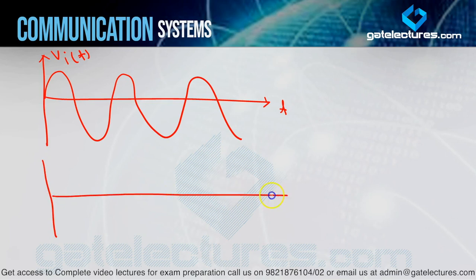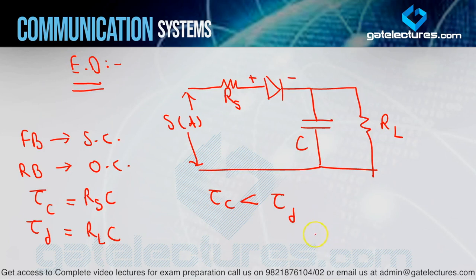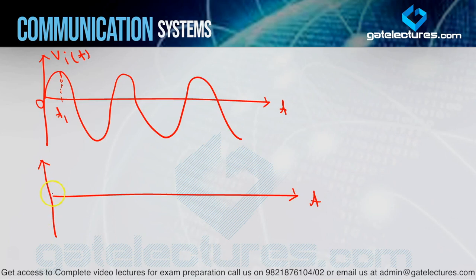So if I draw the output here, from the start up to the point where input is increasing — the diode is forward biased. The input keeps increasing up to the maximum value. So the capacitor charges via the circuit, and since the capacitor and RL are in parallel, the output is taken across the capacitor. If the capacitor charges up to the maximum value of input, the output will also increase up to the maximum value — like this.